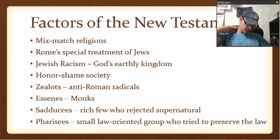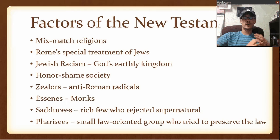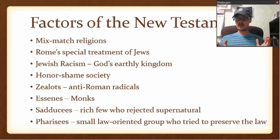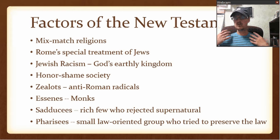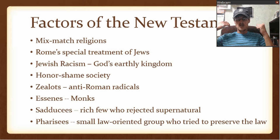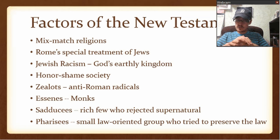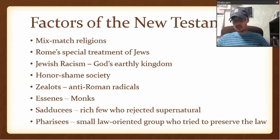Then there were the Pharisees — another small group, very law-oriented. Their goal was to preserve the law in whatever context. It's kind of up in the air where they first came from, but think of it as somewhere after Persia allowed Israel to return to the promised land, or maybe even formed while still in Babylon. By the time of the Gospels they were what we know as the Pharisees. Their goal to preserve the law meant they could adapt to different settings. When Jerusalem is destroyed in 70 AD, the Pharisees still exist and just move their base somewhere else.